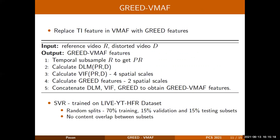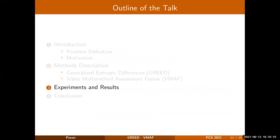The entire algorithm is described here, where the DLM and VIF are calculated by considering the pseudo reference and the distorted video, while GREED is calculated using all three signals: the reference, the distorted, and the pseudo reference. The last step involves concatenating all these features to obtain the GREED-VMAF features. These features are then fed to a support vector regressor to learn the mapping between features and quality. For this purpose, we evaluated it on the recently released LIVE YouTube HFR dataset. Training is done using 70% of the content present in the dataset and the remaining is used for validation and testing, ensuring there is no overlap between the contents.